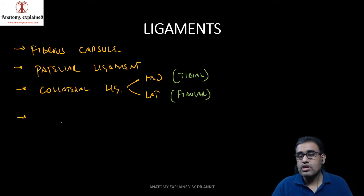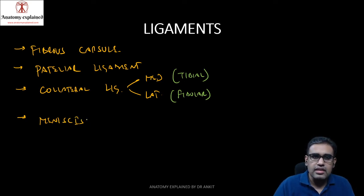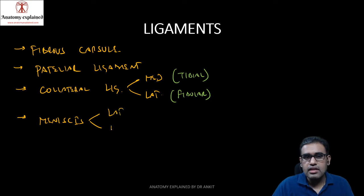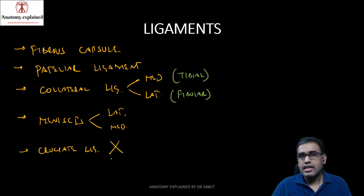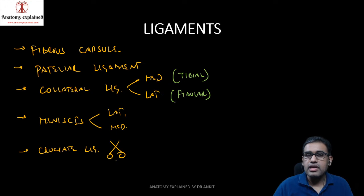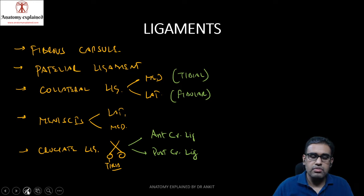Apart from the collateral ligaments, regarding the complex variety, we have articular cartilages known as menisci — present on the lateral as well as the medial side, known as the lateral and medial meniscus. The joint also has a pair of cruciate ligaments, which cross each other and are attached anteriorly and posteriorly with respect to the tibia, giving us the anterior cruciate ligament (ACL) and posterior cruciate ligament (PCL).